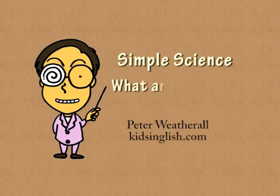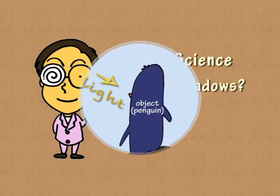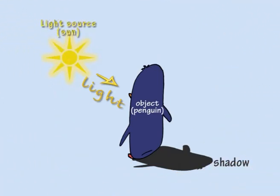Simple Science. What are shadows? A shadow is formed when light from a source is blocked by an object.